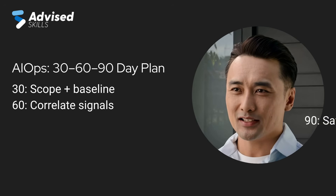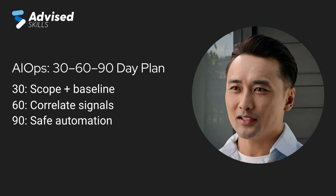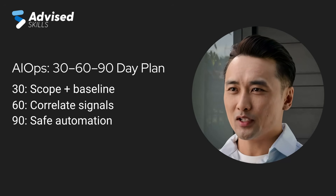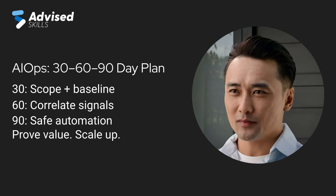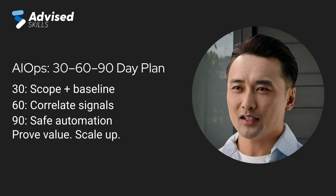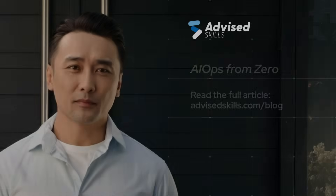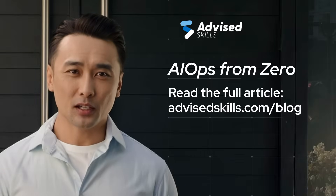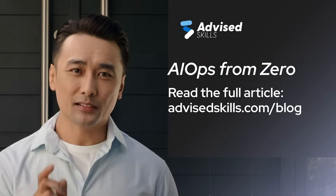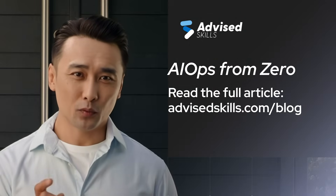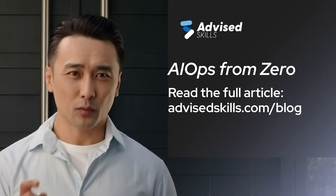By day 90, implement one safe automation scenario, publish outcomes, and scale onboarding. If you want the full deep dive, read the article and use it as your AIOps rollout checklist. Thanks for watching. Explore the full guide and take the next step toward operations automation.